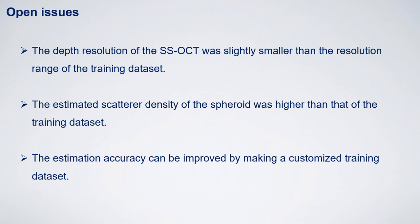Before closing my talk, let me remark on some open issues. In the current implementation, the axial resolution of the swept-source OCT was slightly smaller than the lateral resolution range of the training dataset. Similarly, the estimated scatterer density of the spheroid was found to be larger than that of the training dataset. Hence, the current estimator was not optimal for the spheroid study and might result in lower estimation accuracy. However, it can be easily improved by generating a customized training dataset for this study, and the generation of the training dataset is fully numerical and quick.